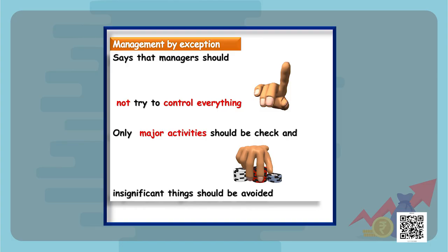Management by exception states that an attempt to control everything results in controlling nothing. So we should try to ignore minor deviations and always focus upon major deviations.